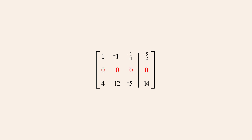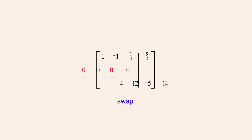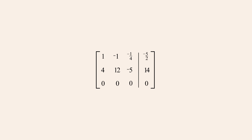Since in reduced row echelon form any rows containing all zeros must be positioned at the bottom of the matrix, we now use a swap operation to exchange rows two and three. Now we must once again zero the leftmost entry of row two, so we use another pivot operation to add negative four times row one to row two.